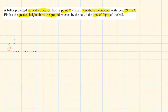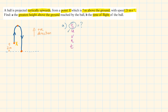A ball is projected vertically upwards from a point X which is 7 metres above the ground with speed 21 metres per second. We need to find the greatest height above the ground reached by the ball and the time of flight. Writing out SUVAT, we circle S because that's what we need. Our initial velocity is 21 metres per second. The final velocity is 0 because at its highest point the ball is turning around, so for that instant the speed will be 0. Taking the positive direction as upwards, the acceleration is minus 9.8.